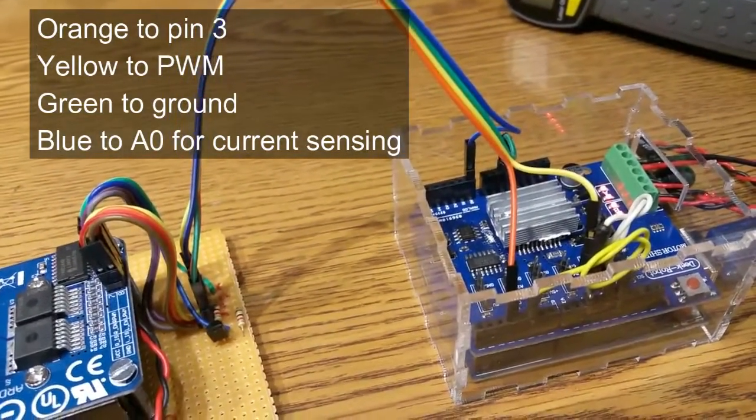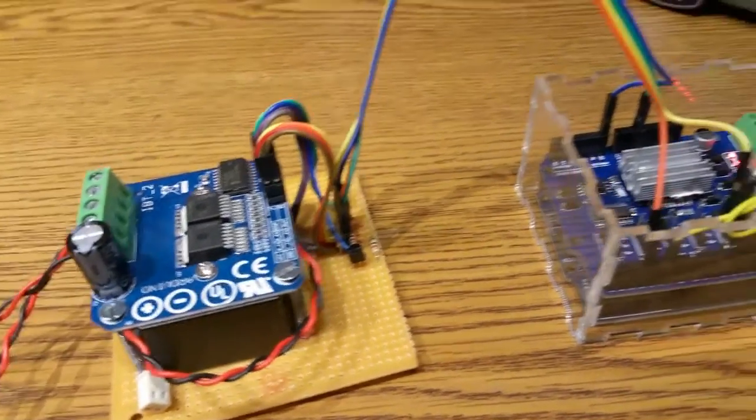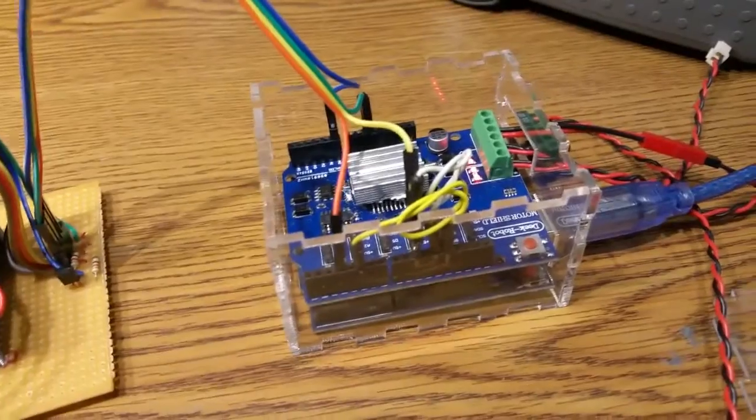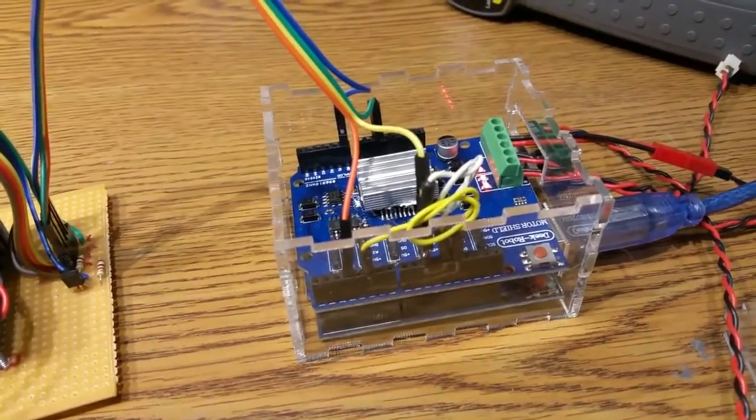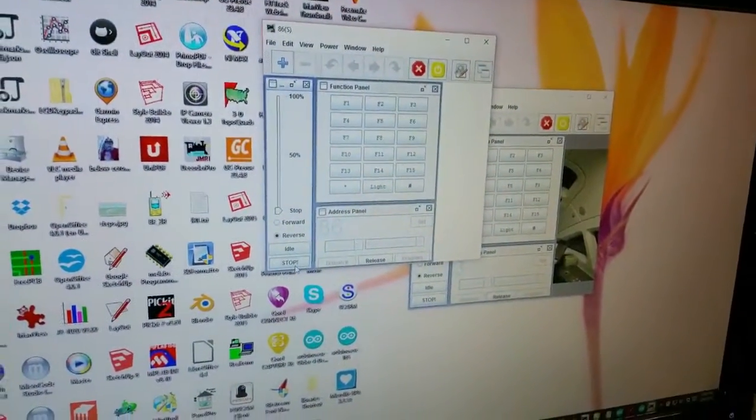And then there's ground of course and the blue wire is the current sensing because this does supply current sense that can be interpreted by the DCC++ controller. Of course the controller is connected by USB cable back to my computer and I have two throttles running on JMRI.